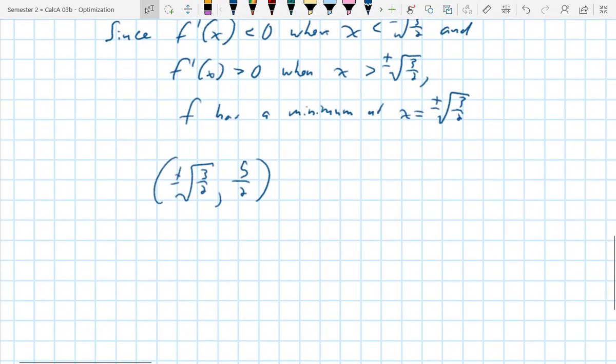Okay, that was our first one. Every one of these is going to be like this somehow, but it's two steps. You find where you think it happens, and then you prove whether it's a max or min. It's that second step that people are going to miss. Don't forget that one.